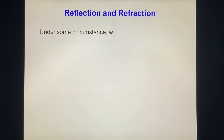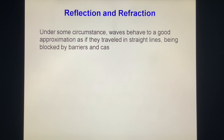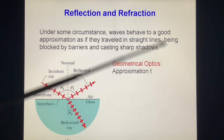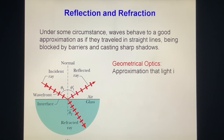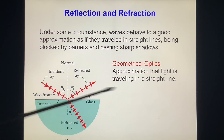Under some circumstances, waves behave to a good approximation as if they travel in straight lines, being blocked by barriers and casting sharp shadows. This is called geometric optics — an approximation that light is traveling in a straight line.